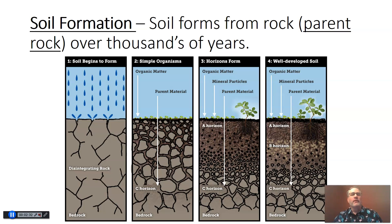If we look at this image, we can see in window number one where it says 'soil begins to form' that it's just starting with rock, and we can see some rain dropping down on it and cracks in that rock. That's going to turn out to be important. As we move from left to right on this image, we see that the rock gets broken down smaller and smaller and smaller. We need to look a little bit more at this process that breaks down rock and helps to form soil.